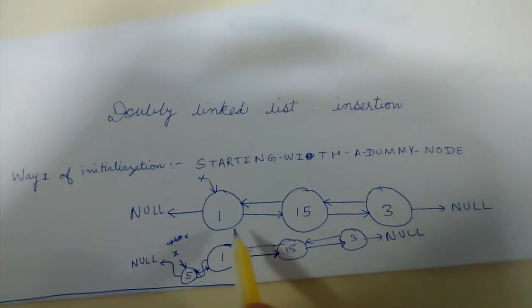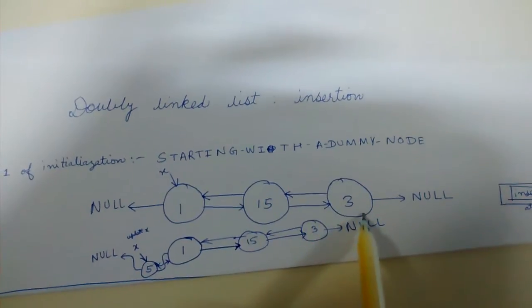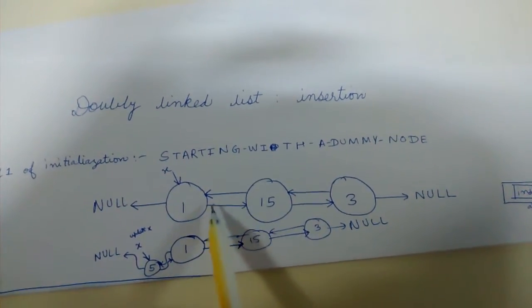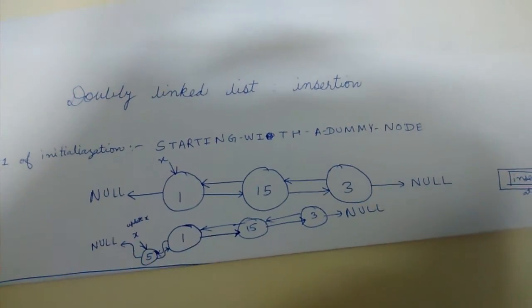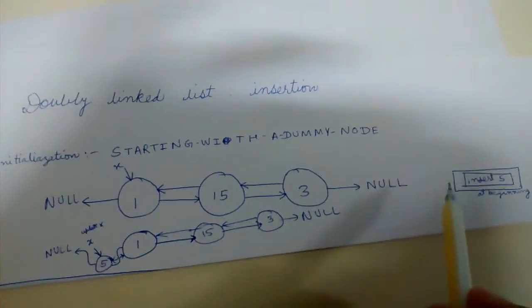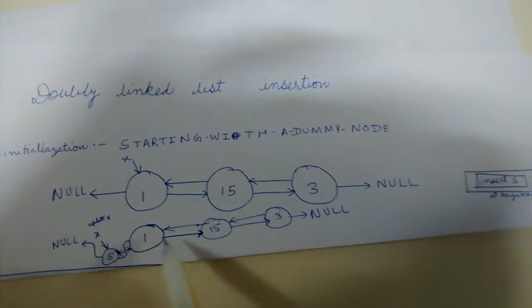Like this is a linked list: one, fifteen, three, and each has double pointers, one two forward and one two backward. So now we need to insert five, so we will insert at the beginning. I am assuming that we are inserting a new element at beginning of the list.